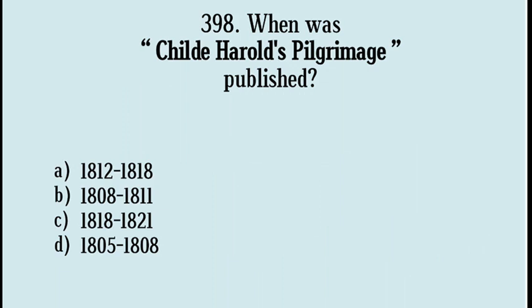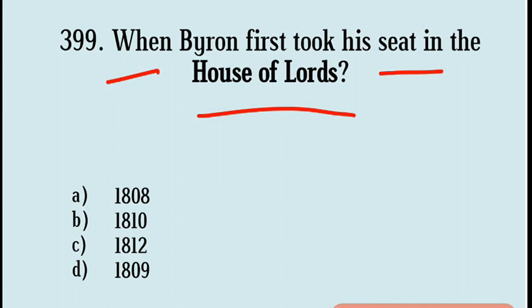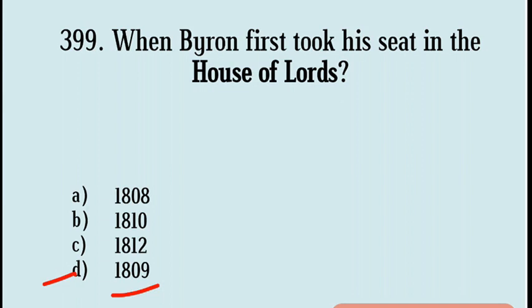Next question: When did Byron first take his seat in the House of Lords? Options are 1808, 1810, 1812, 1809. Correct answer: Option D, 1809. Lord Byron was a member of the House of Lords from 30th March 1809 to 19th April 1824.